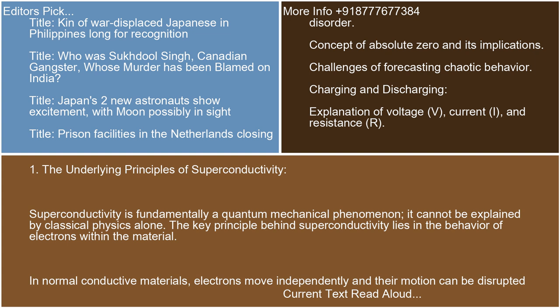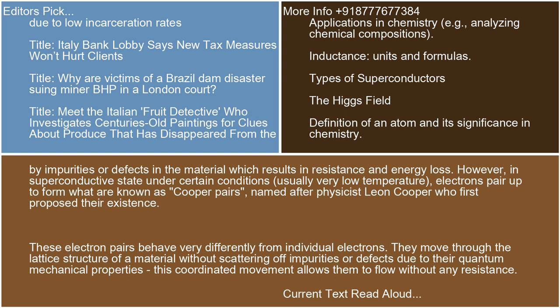In normal conductive materials, electrons move independently and their motion can be disrupted by impurities or defects in the material, which results in resistance and energy loss. However, in a superconductive state under certain conditions — usually very low temperature — electrons pair up to form what are known as Cooper Pairs, named after physicist Leon Cooper, who first proposed their existence.